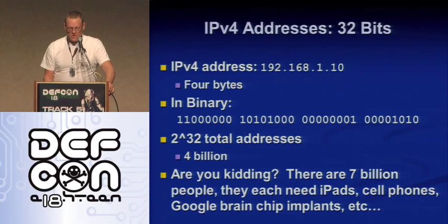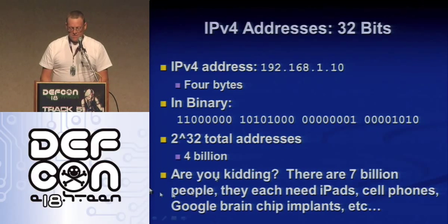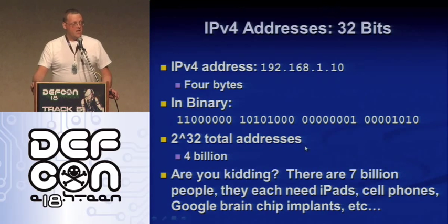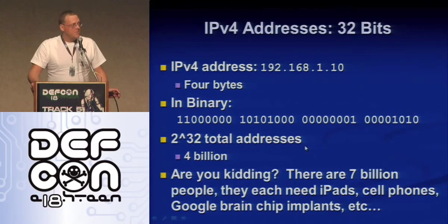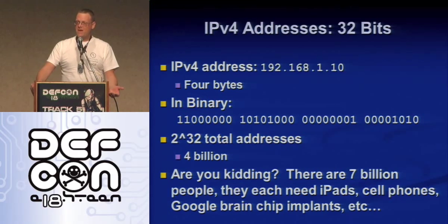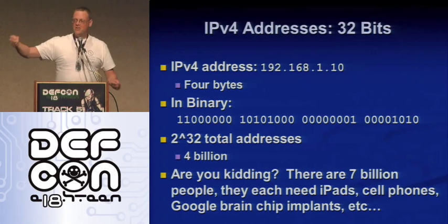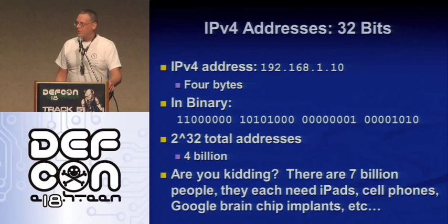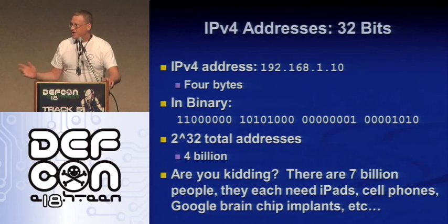IP version 4 — we've all seen these addresses like 192.168.1.10. In binary that's a 32-bit binary number, and we all know how to subnet that, but there's only 32 bits so there's only 2 to the 32 of them, and that's only four billion. That's ridiculous — there's seven billion people, and how many devices do you have on your body right now that need an IP address? I must have four, and when I'm in my house I have another 12. There's no way four billion is ever going to cut it.